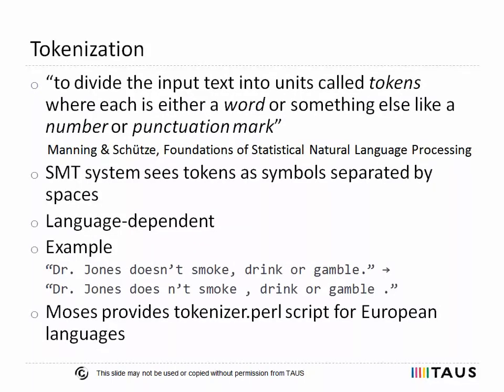A basic phrase-based statistical MT system sees training data simply as symbols separated by spaces. It doesn't have a conceptual understanding of what the text content means. Therefore, before training such an MT system, we have to separate punctuation from words. This is called tokenization.